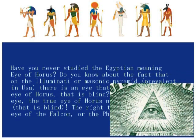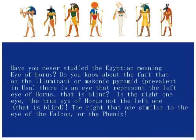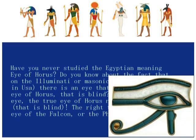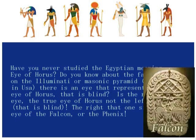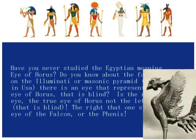あなたは、ホルスの目の意味について、エジプト語を勉強したことがないのですか？イルミナティやフリーメイソンのピラミッドの中には、USAでは広く知られていますが、ホルスの左目を表現しています。左目は盲目の目です。ホルスの真の目は右目であり、左目ではありません。右目は、ファルコン、あるいはフェニックスの目に似ています。